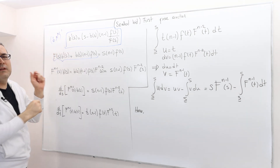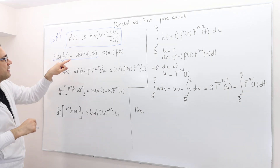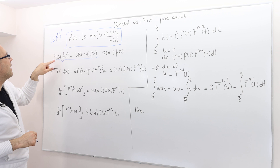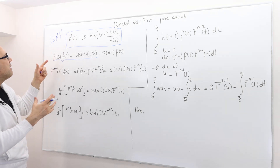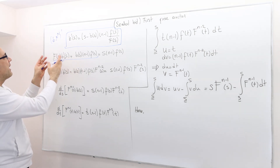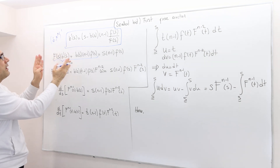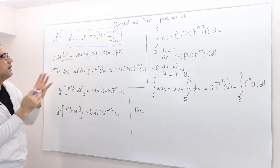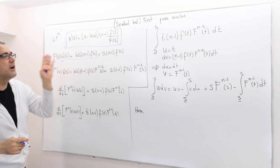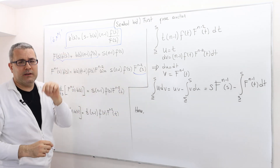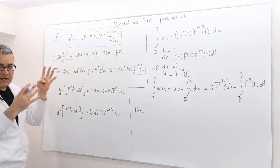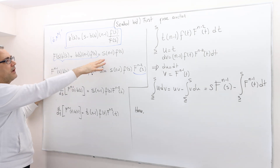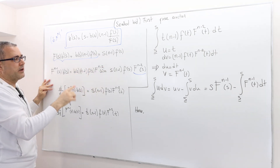All right, so n minus 1 power of capital F. But the thing is, we don't have F to the power n minus 1 here. So how can I make this look like the derivative of F to the power n minus 1? Simple — multiply both sides by F to the power n minus 2. That's not going to change the equality. So in the next step, I multiply both sides by F to the power n minus 2.